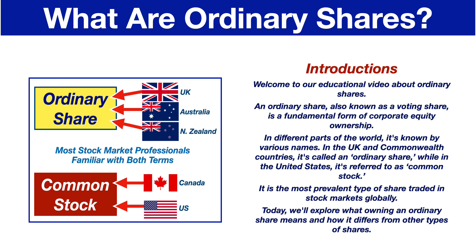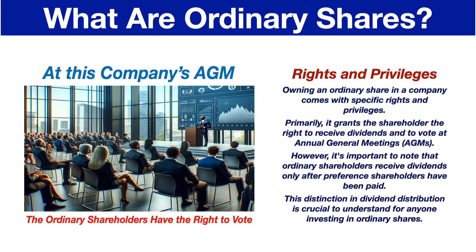Today, we'll explore what owning an ordinary share means, and how it differs from other types of shares. Owning an ordinary share in a company comes with specific rights and privileges. Primarily, it grants the shareholder the right to receive dividends and to vote at annual general meetings. However, ordinary shareholders receive dividends only after preference shareholders have been paid. This distinction in dividend distribution is crucial to understand for anyone investing in ordinary shares.